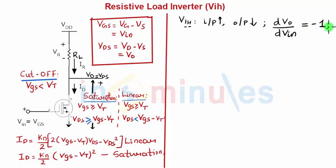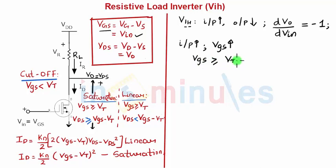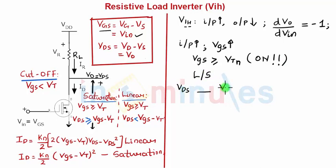As a standard procedure, we'll identify the region of operation for the NMOS transistor. Once identified, we'll equate the current flowing through the transistor to the current flowing through the resistor. Input high means VGS is greater than or equal to the threshold voltage VT, so the transistor is on. We need to determine whether it's operating in the linear region or the saturation region using the VDS vs. VGS - VT comparison.